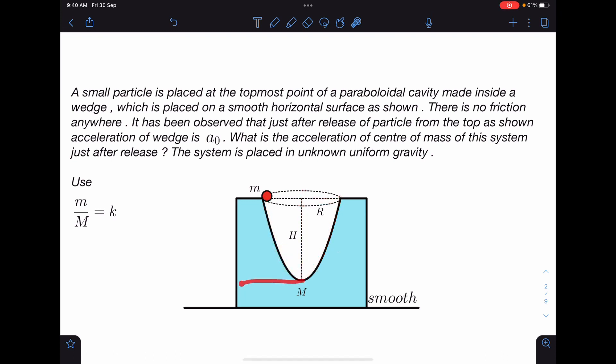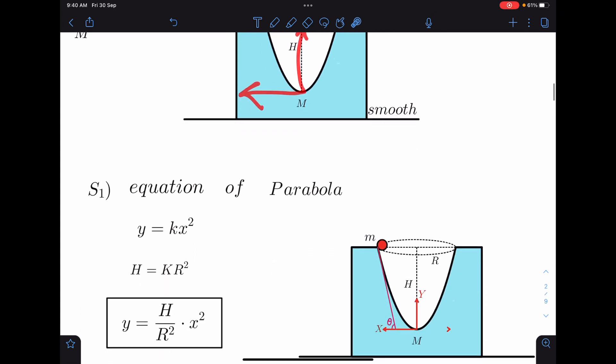H and R are given, so best thing will be to take coordinate system like this so that a simple parabola y = kx² can be used. This point has y coordinate h and x coordinate r, so we obtain this parabola.